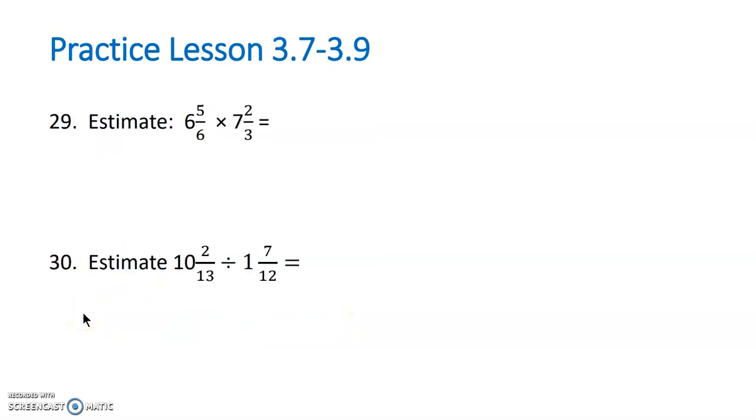For number 29 and 30, we're not going to solve the actual. We're just going to estimate. So we're going to round each mixed number and then solve with our estimates. So 6 and 5/6. Because 5 out of 6 is more than halfway, 6 and 5/6 will round to 7. 7 and 2/3, 2 out of 3 is more than halfway. So we're going to round that 7 and 2/3 up to an 8. So our estimated answer is 56. For number 30, 10 and 2/13, 2 out of 13 is not at halfway. So this will round down to 10. And for our 1 and 7/12, 7 out of 12 is at halfway. 6 out of 12 is exactly half. So 7 is more than that. So 1 and 7/12 will round to 2. 10 divided by 2 is 5. So 5 is our estimate.